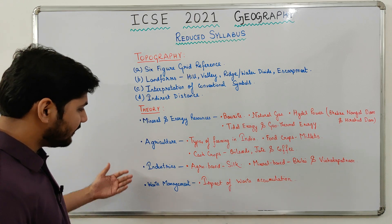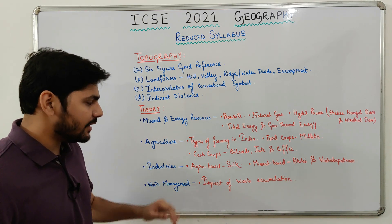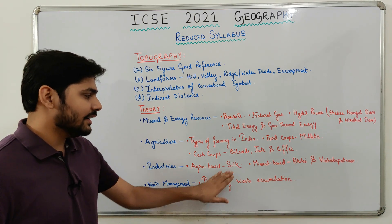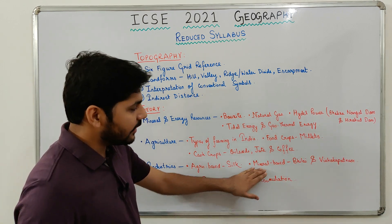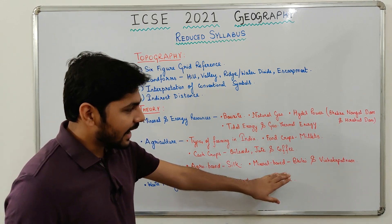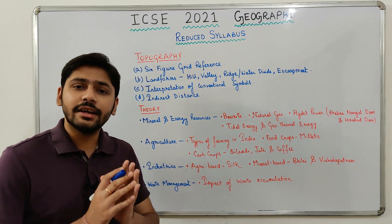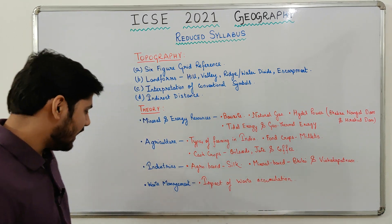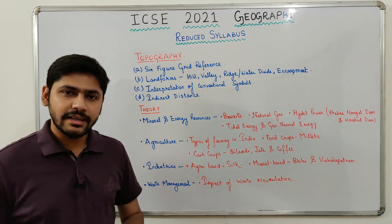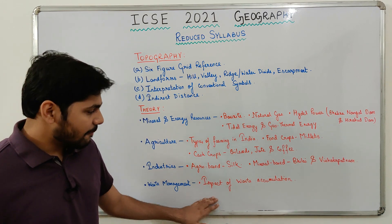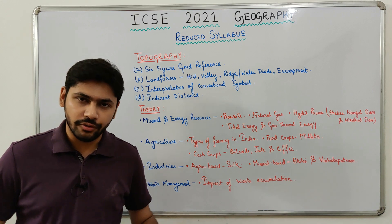Then we have industries. From agro-based industries, silk has been removed. From mineral-based industries, the Bhilai and Visakhapatnam plants have been removed. The last chapter with reductions is waste management, from which the impact of waste accumulation has been removed.